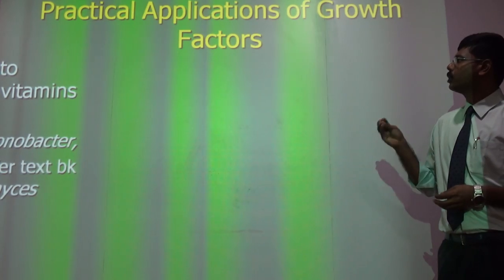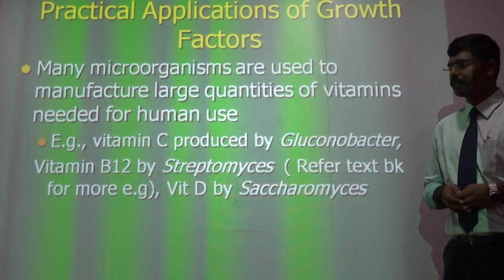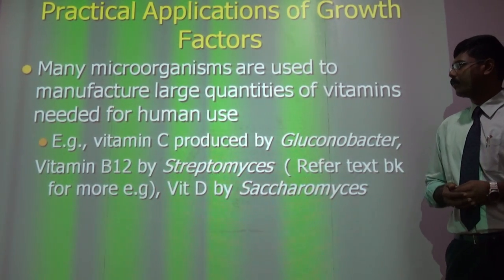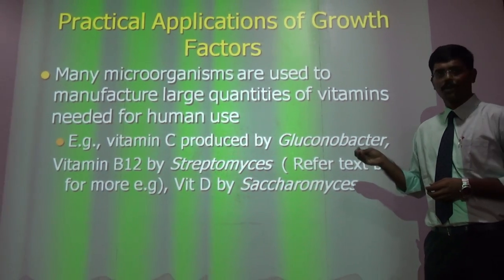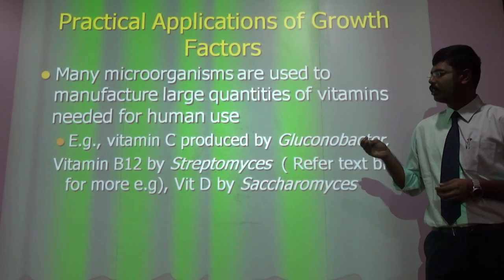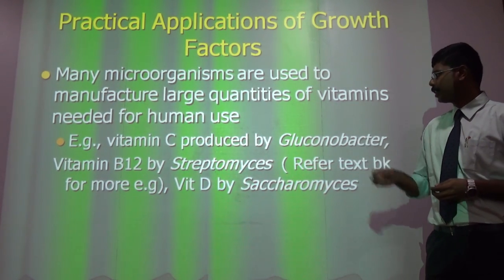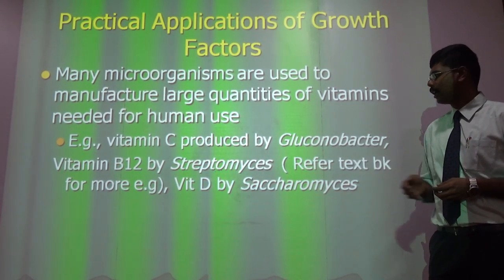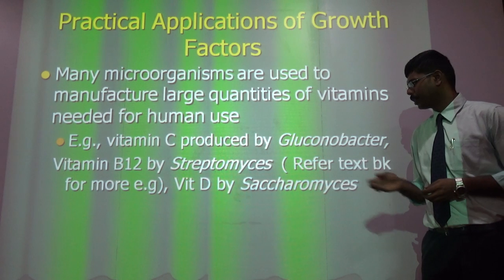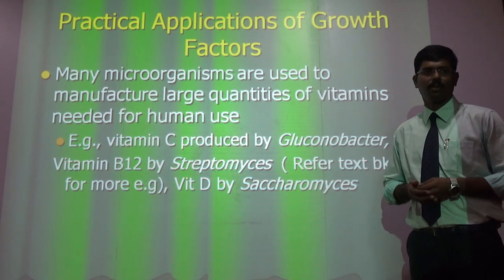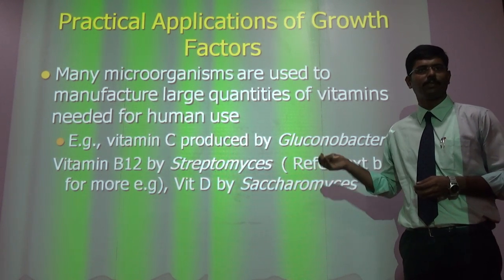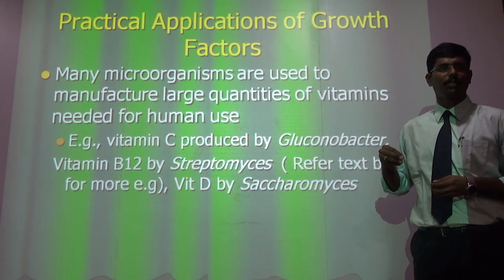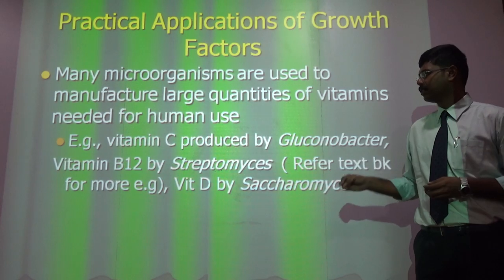These are the practical applications of growth factors that we obtain from microbes. For example, vitamin C is produced by Glucobacter, and vitamin B12 is produced by Sucromasis. These microorganisms, in return, provide us with vitamins through our plants.